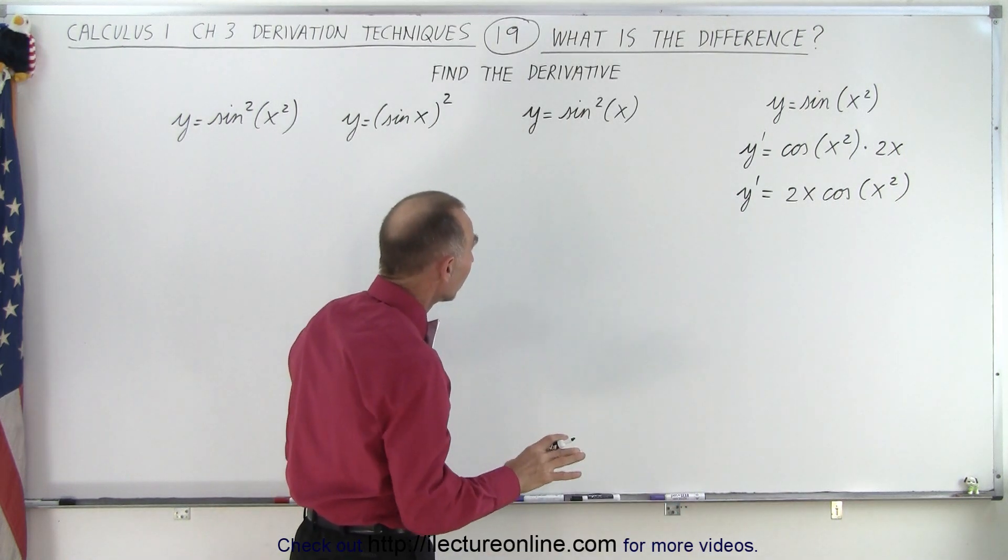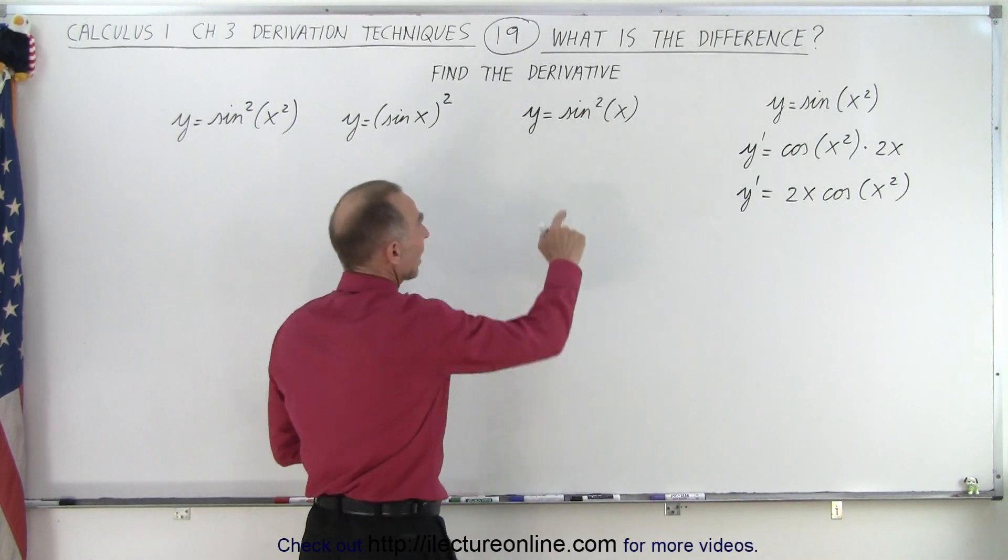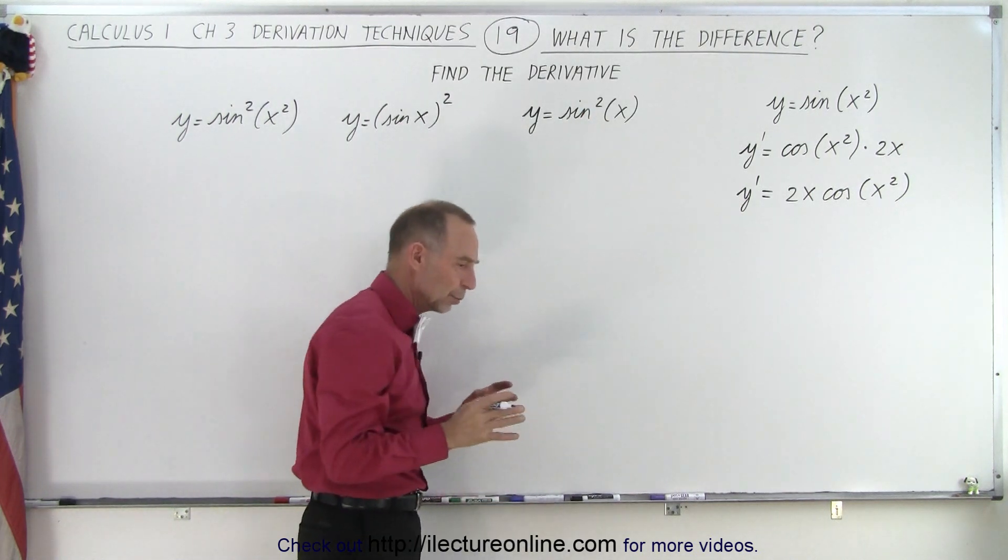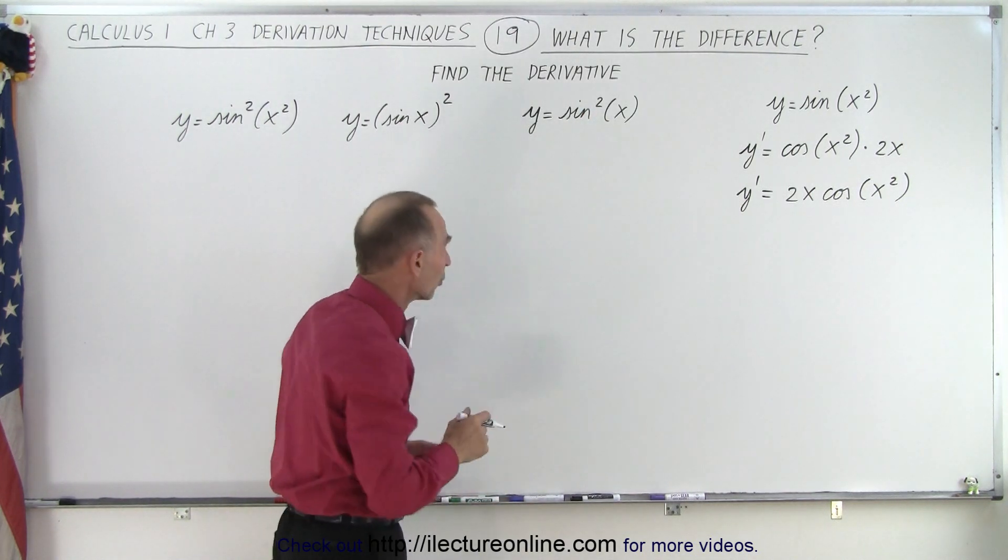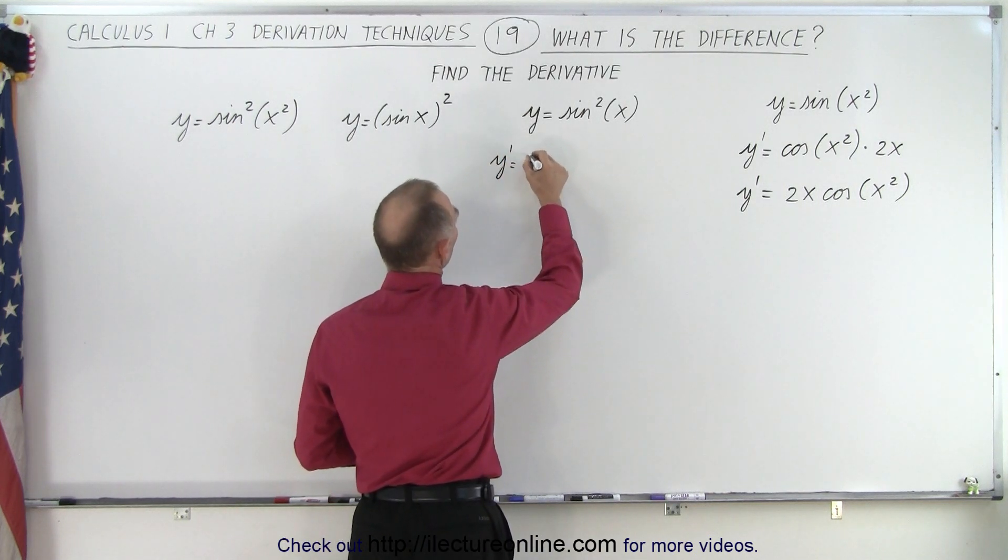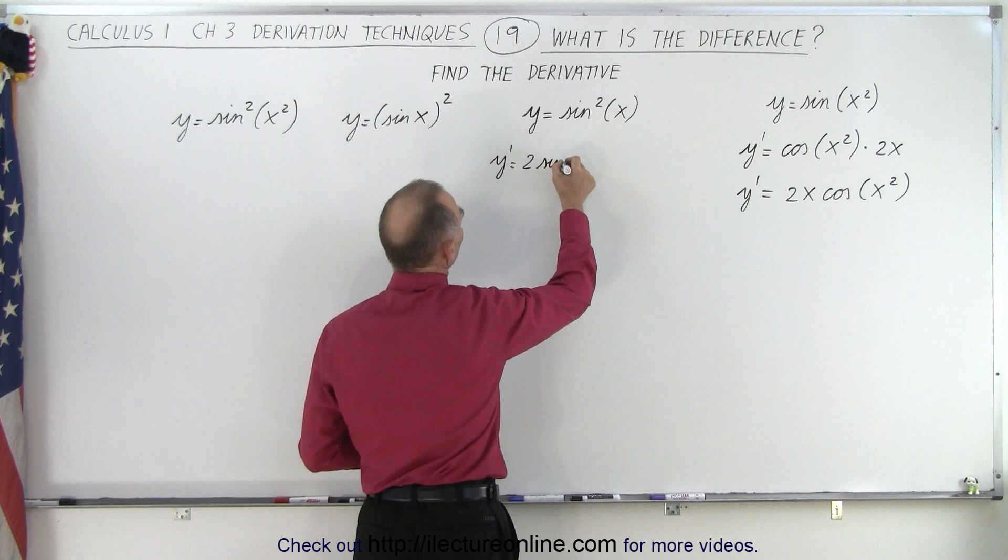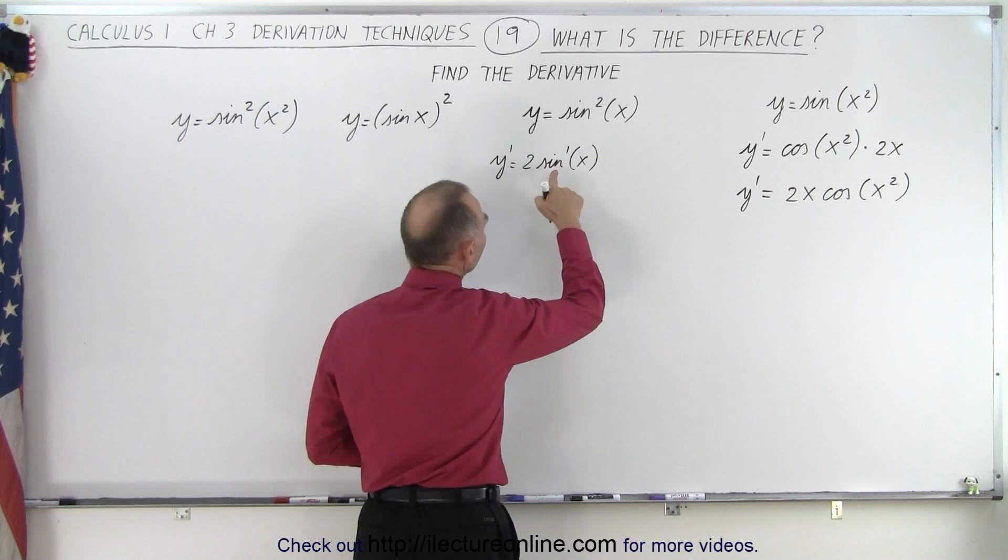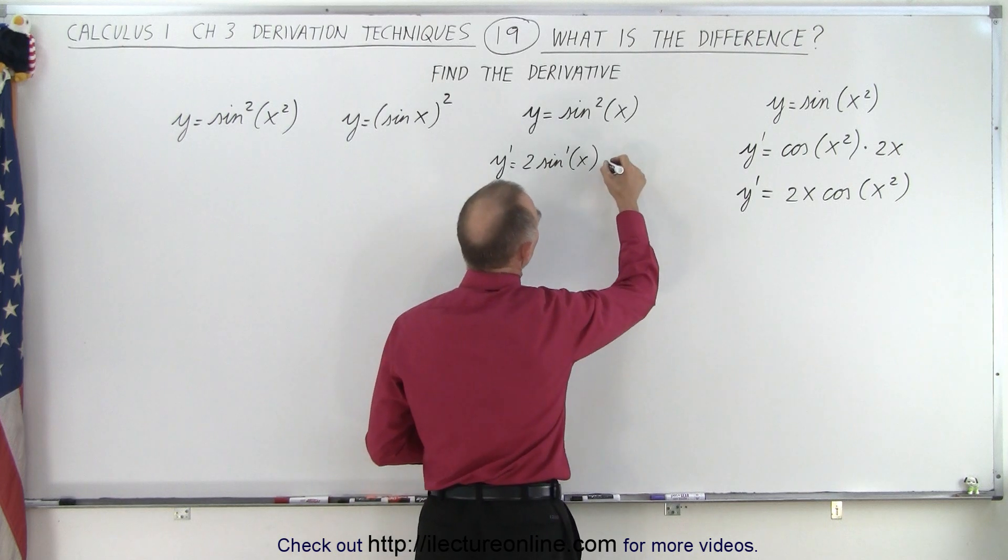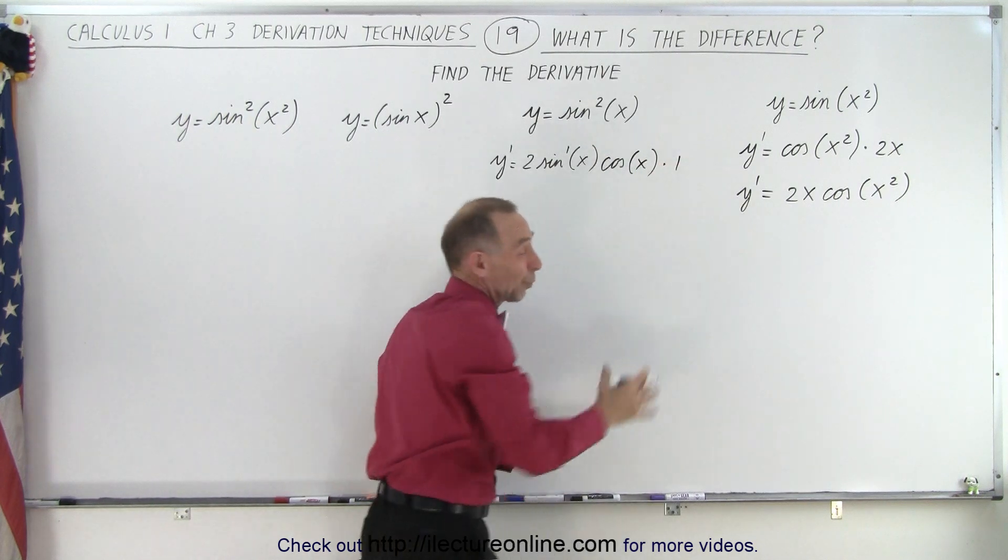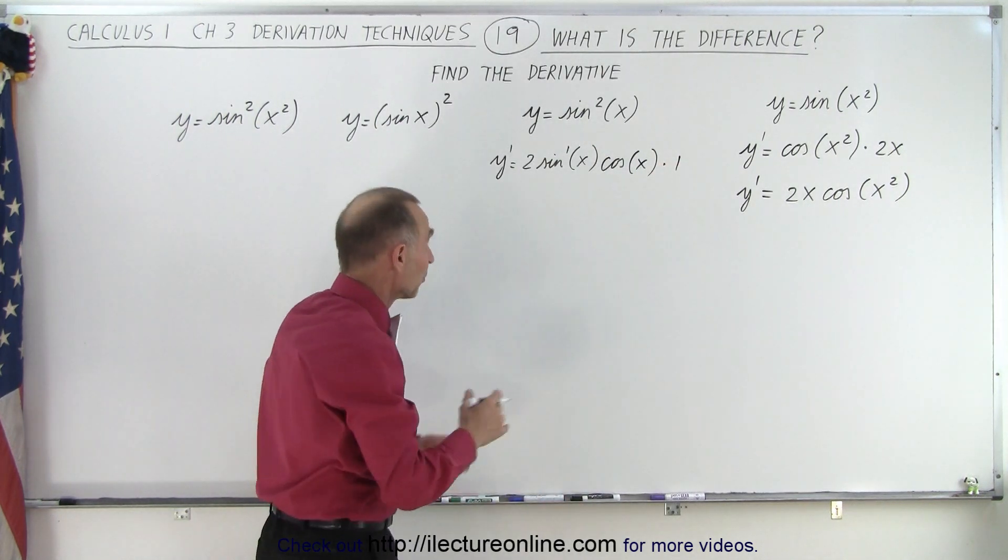Now the second one is a little bit different. Notice here we have y equals the sine squared of x. So first we need to use the exponential rule. So here we have y prime is equal to 2 times the sine to the first power of x times the derivative of the sine, which would be the cosine of x, times the derivative of the angle x, which is times 1. We don't have to write that, but that's what we should be doing.